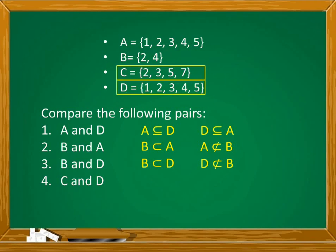Number 4, sets C and D. Check: are all elements of C — which are 2, 3, 5, and 7 — in D? No. So C is not a proper subset of D. How about D? Are all elements of D in C? No. So D is not a proper subset of C.